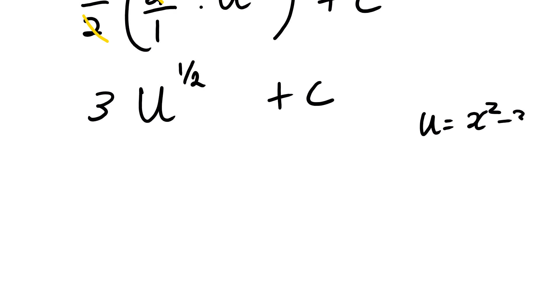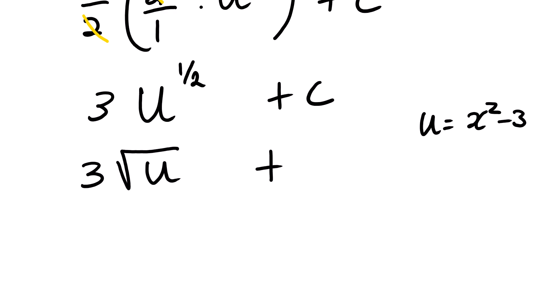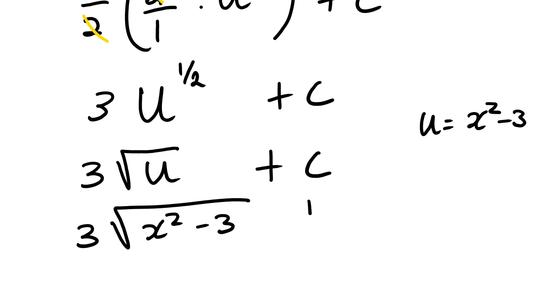Remember that u equals x squared minus 3, so we substitute back. Also remember that u to the power 1 over 2 is the same as square root of u. So our final answer is 3 times square root of x squared minus 3 plus C. This is our answer.